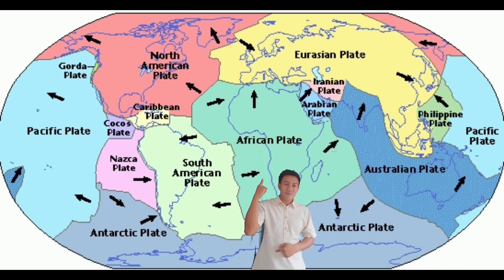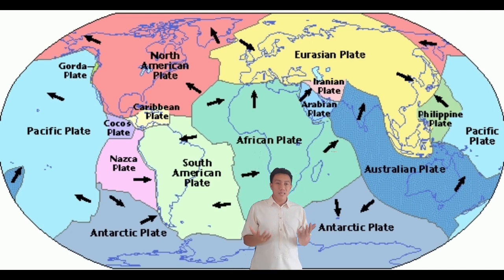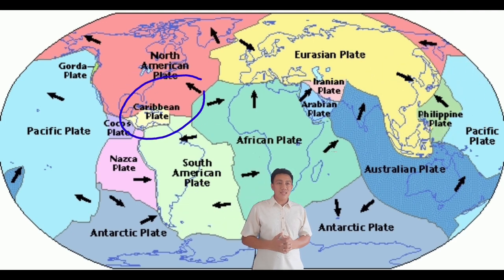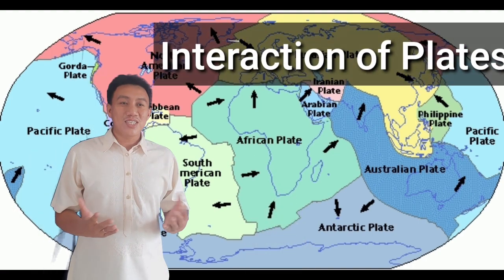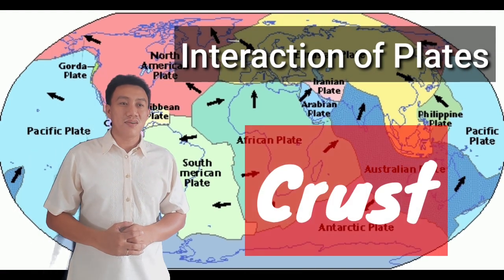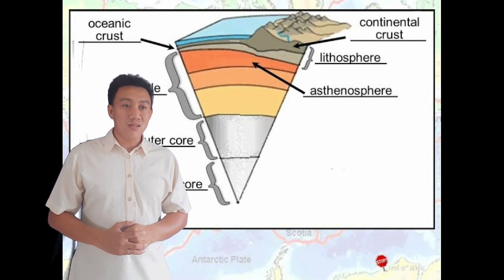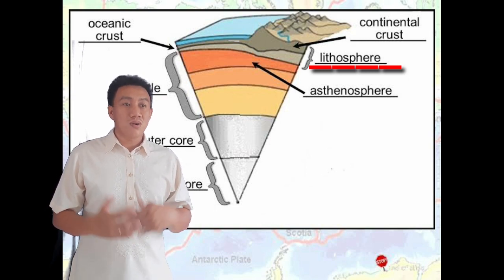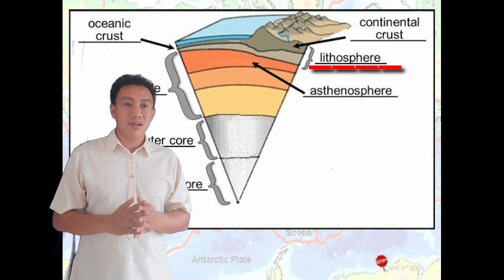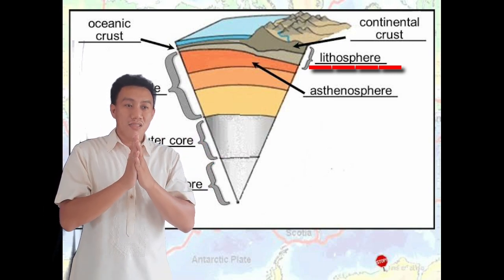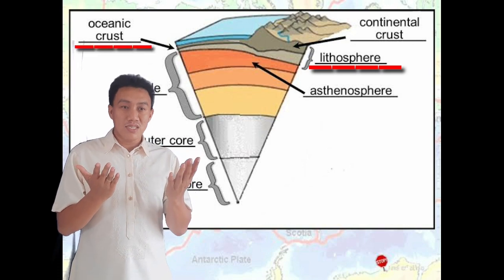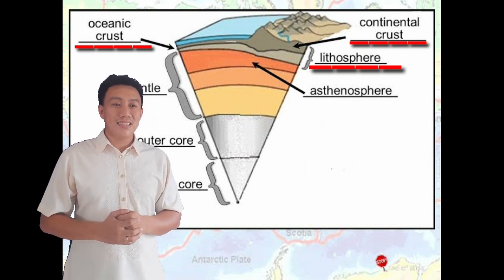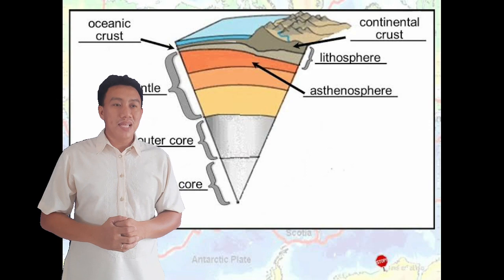The arrows represent the interaction of the plates — whether it is convergent, divergent, or transform interaction. The interaction of the plates has a result on our crust, because the lithosphere is found between the crust and the upper part of the mantle. So if there is movement in our lithosphere, there is a corresponding effect on our crust, either on our oceanic or continental crust. Let's study the different geological activities that happen at the types of plate boundaries.